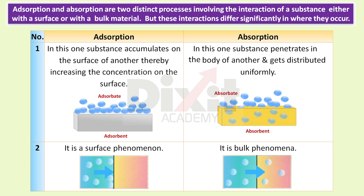Point number one. In adsorption, one substance accumulates on the surface of another, thereby increasing the concentration on the surface. In absorption, one substance penetrates into the body of another and gets distributed uniformly.